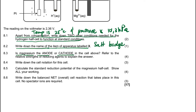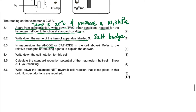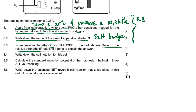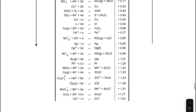The question asks: is magnesium an anode or a cathode? The answer is magnesium is an anode, as we specified. Now I'm going to write the explanation for 8.3: magnesium is the anode. The question says refer to the relative strength of the reducing agent to explain your answer.